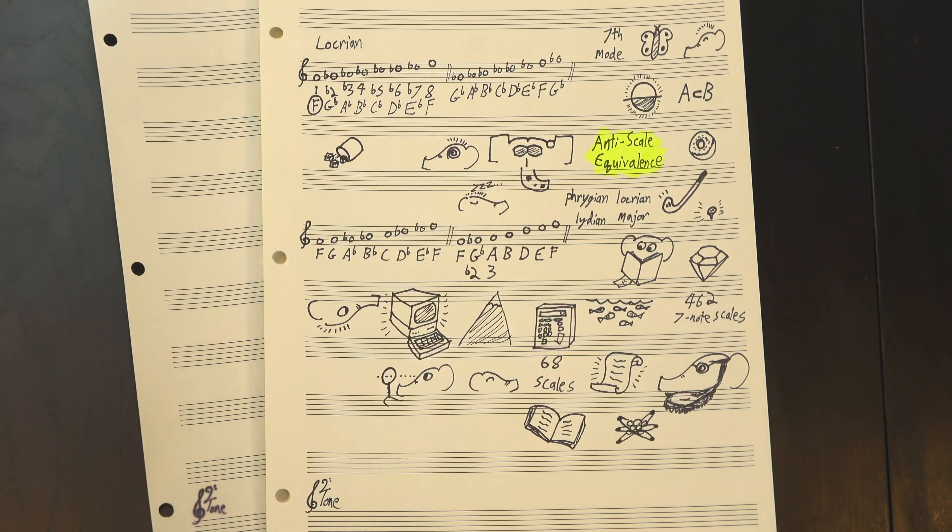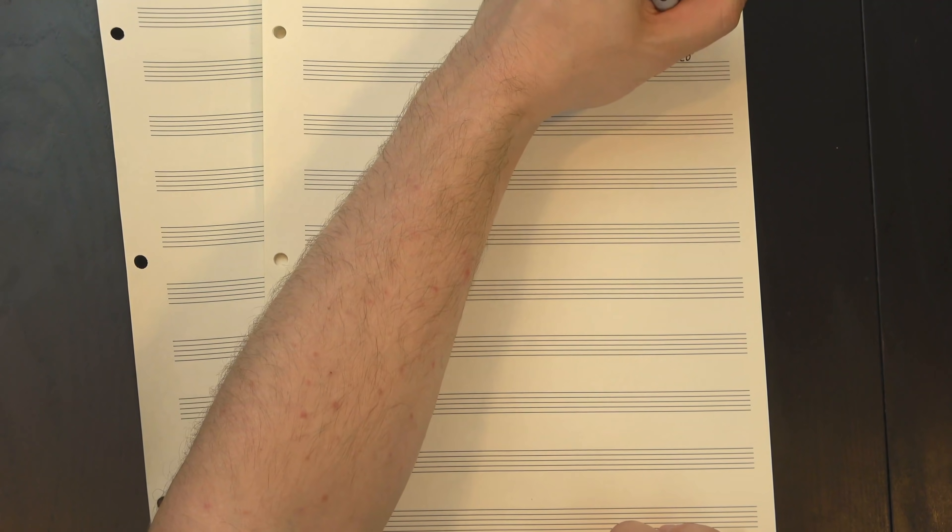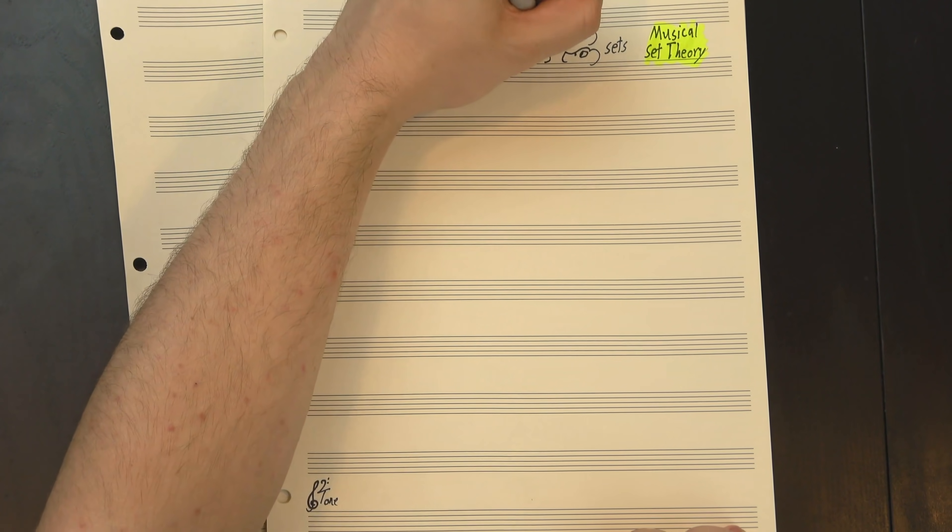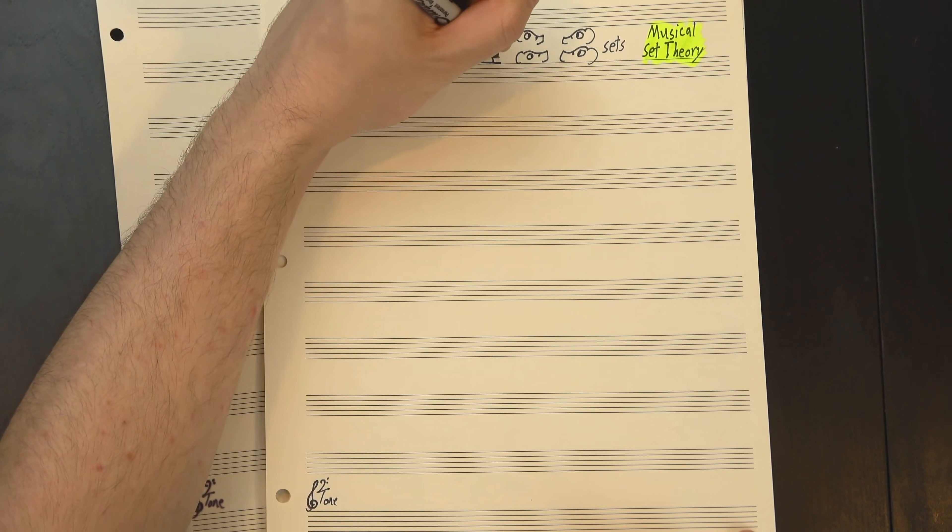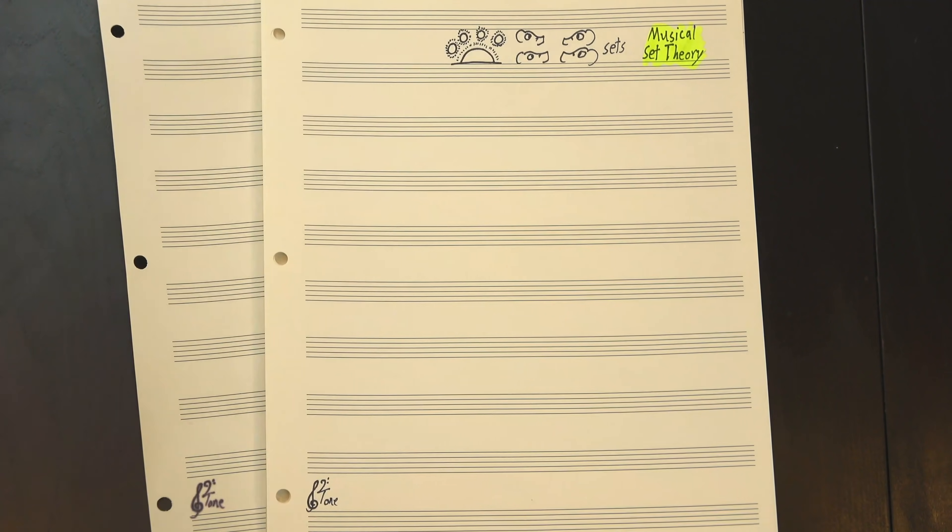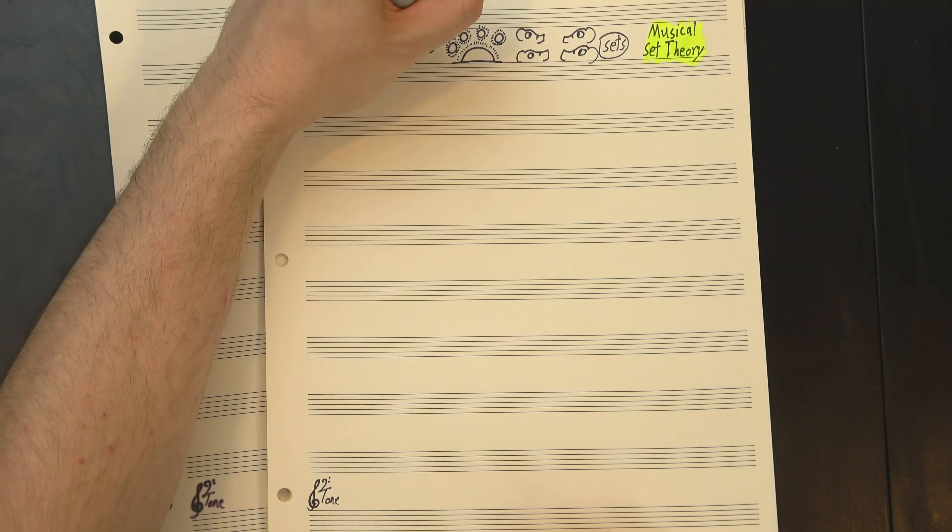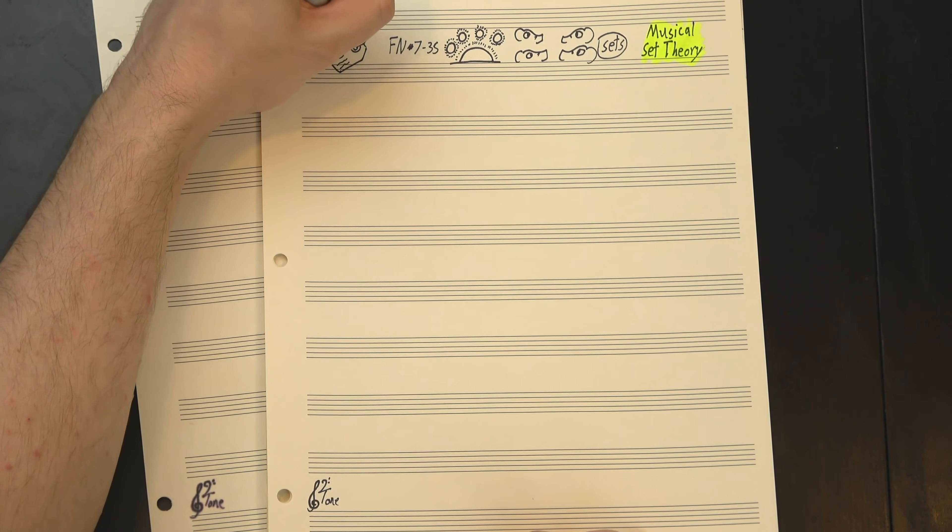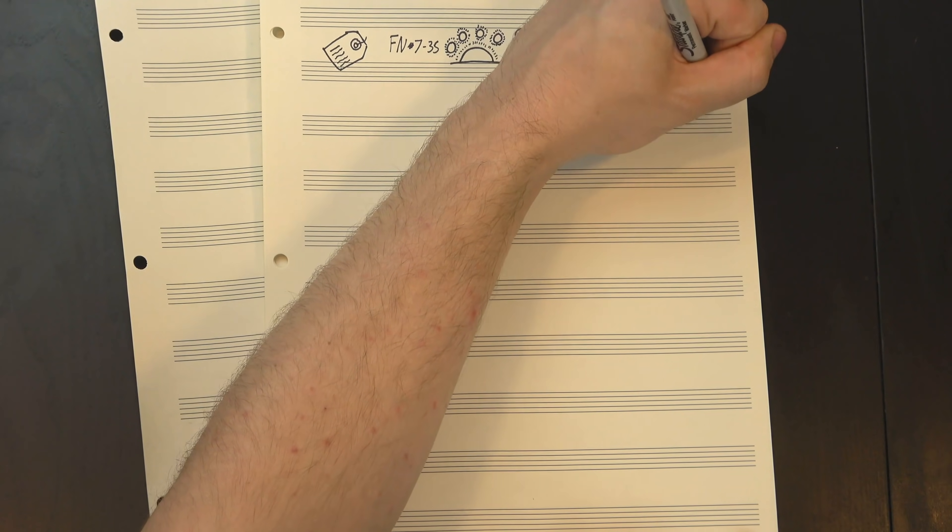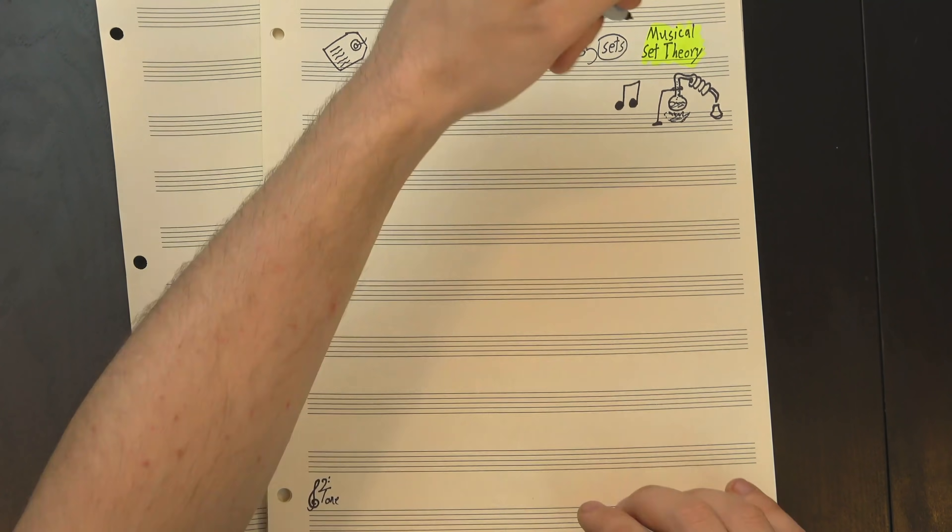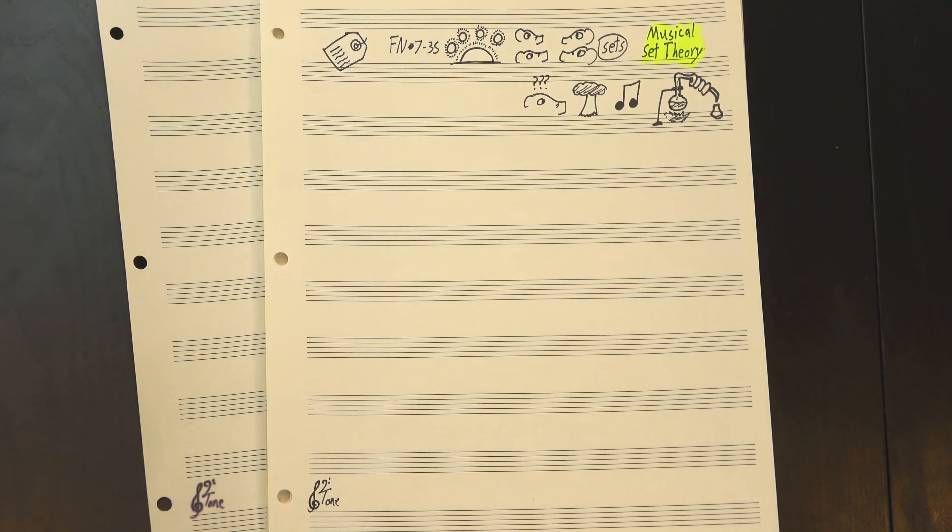Turns out there's 68, which is a much more reasonable number to work with. Once I had that list, I went through it to see what I could find that might help me explain how this property works, but before I get to those results, I gotta do a quick definition. This problem is pretty close to a field called musical set theory, which mainly concerns itself with objects called sets. A set is kind of like a modal family. If you took all the possible major scales and all their modes and bundled those all together, you'd have a set.